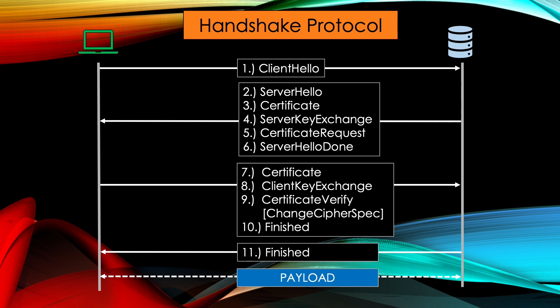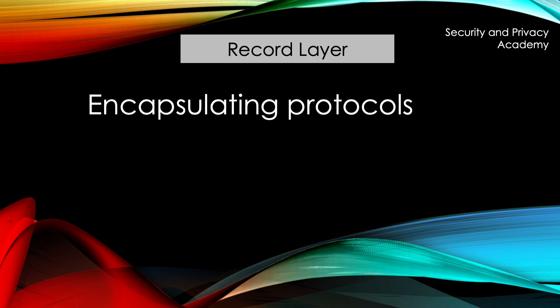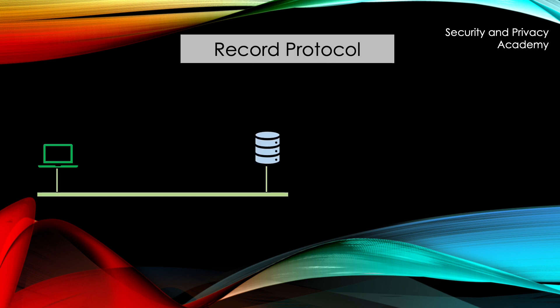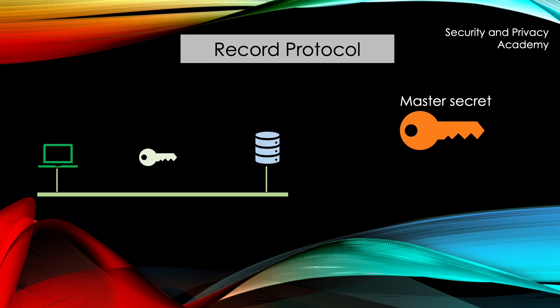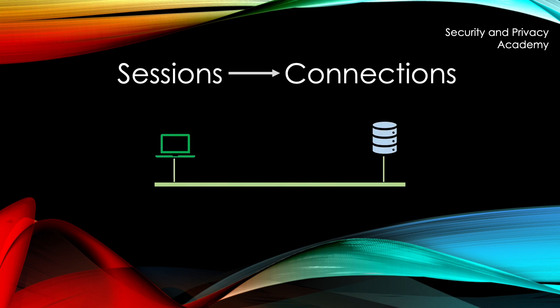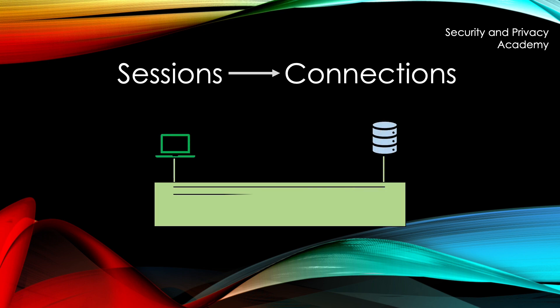I want to briefly touch on the record layer as well. The record layer is used to encapsulate the handshake layer's protocols. It is used to grant confidentiality and integrity. The record protocol uses the previously established master secret and derives from it the symmetric key used for the concrete connection. The record protocol uses MAC keys and symmetric keys to encrypt the connections. One big advantage of TLS is that this cumbersome process of the TLS handshake must only be done once, since once this session is established, every subsequent connection within this session uses the master secret through the record protocol. That means that multiple connections are possible once the session is established.